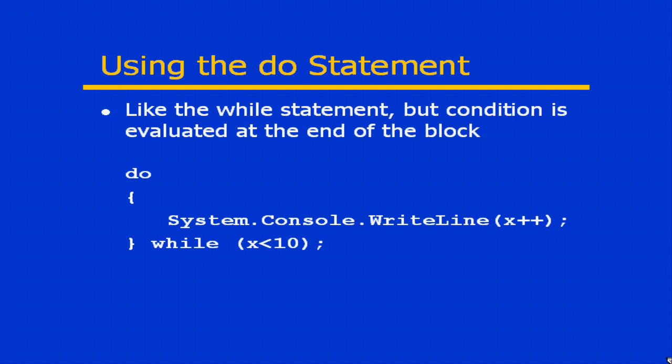With the while statement, you have no such guarantee. If the condition is not valid at the top of the block, the entire block would be skipped. For a do, we know the code will execute once, and then it will evaluate the condition at the bottom of the block.